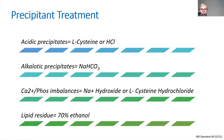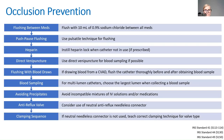Treatment by precipitant type: for acid-based drug precipitants, use L-cysteine or hydrochloric acid. For alkalotic precipitants, use bicarb. For calcium-phosphorus imbalance, use sodium hydroxide or L-cysteine. For lipid precipitants, the best treatment is ethanol.